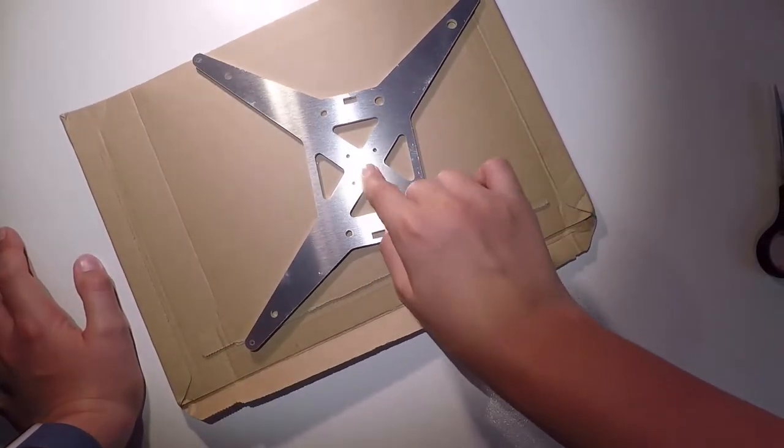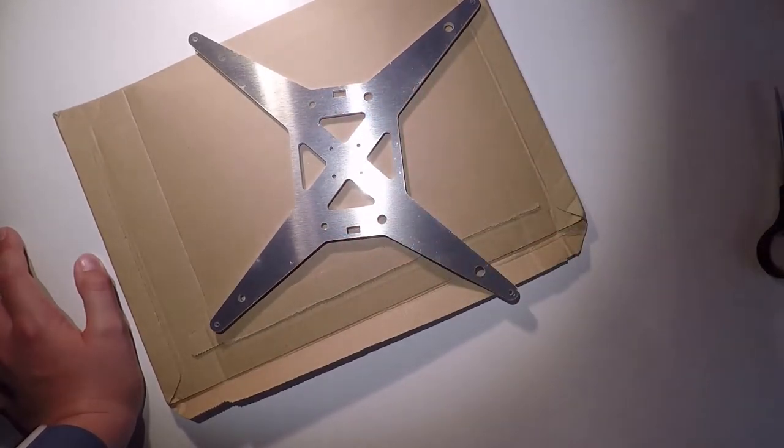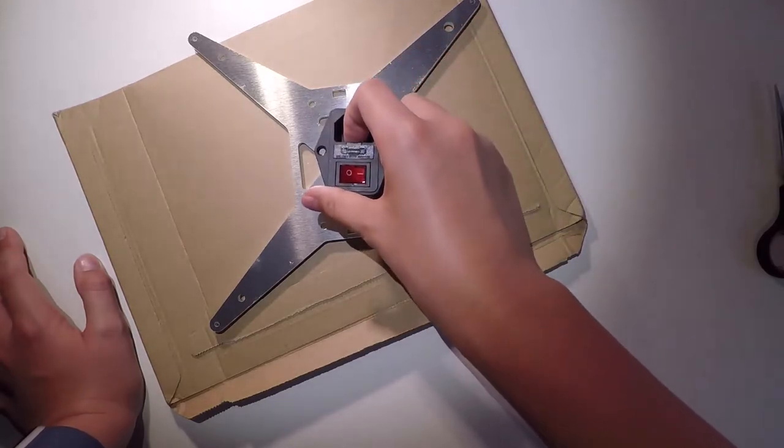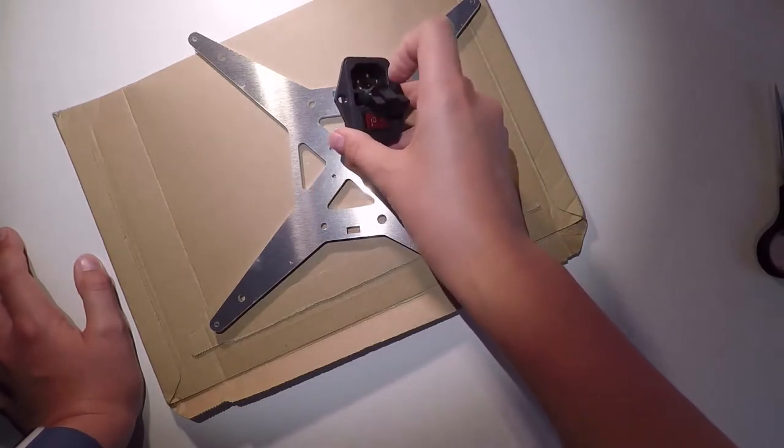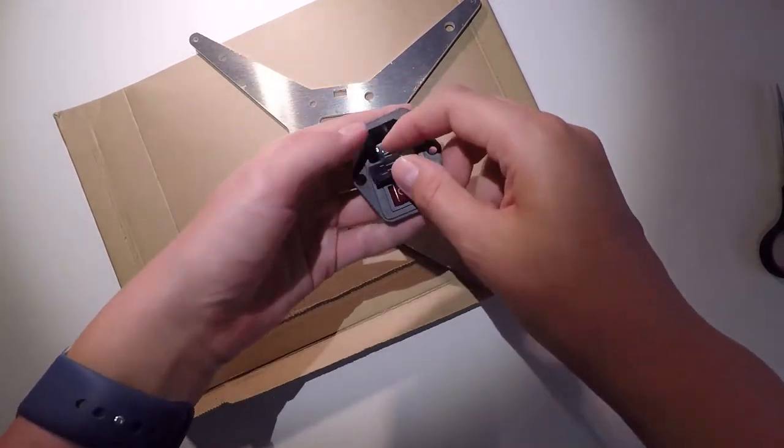But in the next video, you will see me install this Y carriage on the Tarantula. This one, I have no idea when I'll get to install, because I need to get a fuse to put inside here. And I have no idea if I'll be able to get one. I'll ask my dad if he has one.